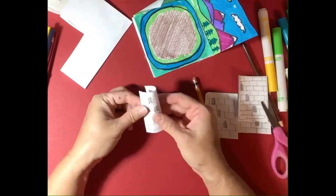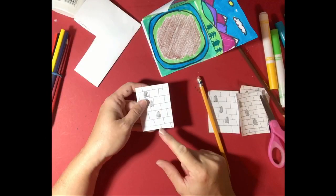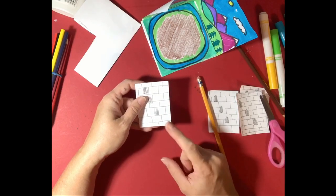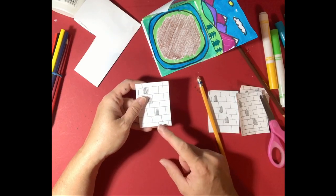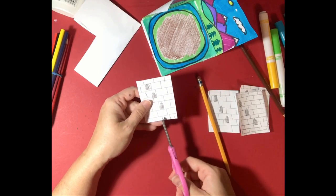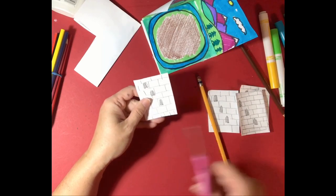Alright. So we do need to add a couple of tabs to be able to tape it down or glue it down. And all I'm going to do is I'm going to make a little snip here, here, maybe here.